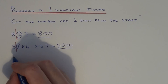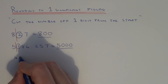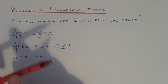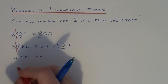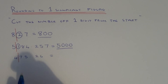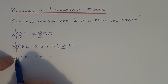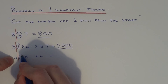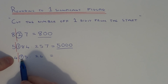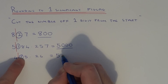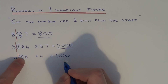Let's do another one — this time 475.26. If we round it to one significant figure, we cut it off one number from the start. So we're either going to round it down to 4 or round it up to 5. This time the number after the line is 5 or above, so we need to round the number up. So it'll be 5, then fill in 0's up to the decimal point, giving us 500.